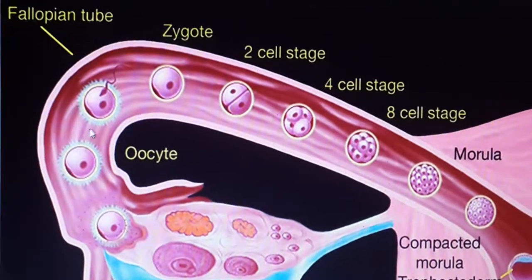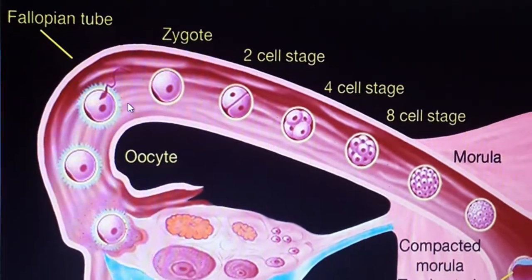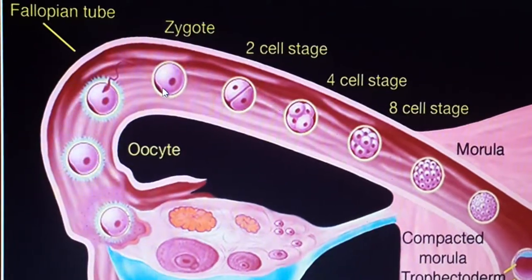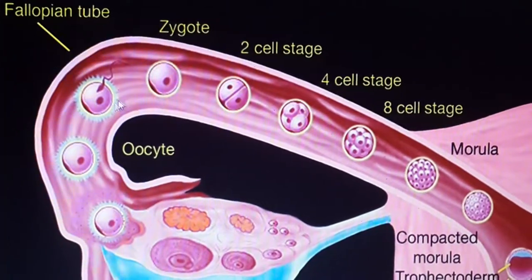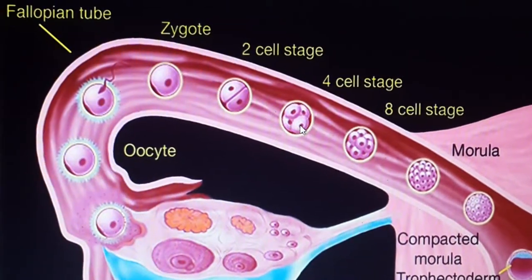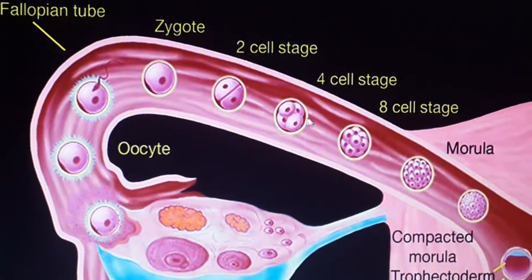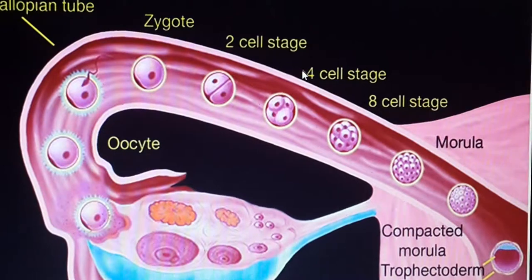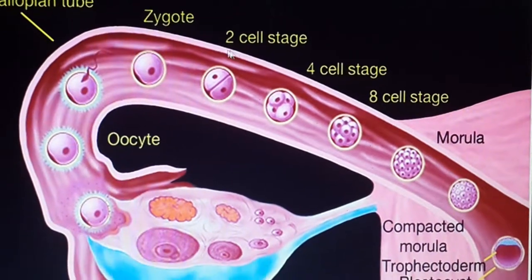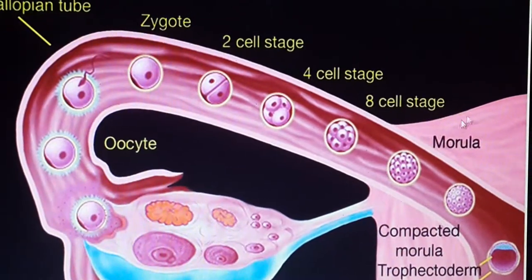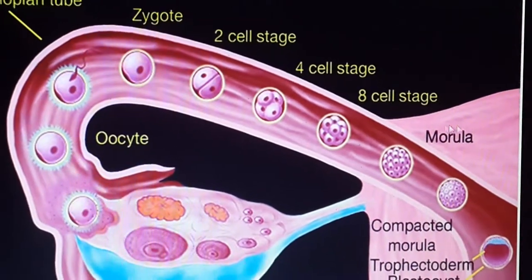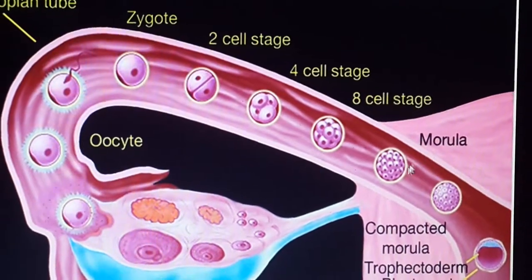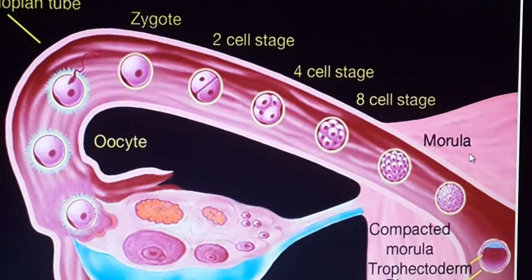Then fertilization occurs, and then the division begins. This process is called the cleavage process, where the zygote passes through cell stages: the two-cell stage, four-cell stage, eight-cell stage, until it becomes about 16 cells.